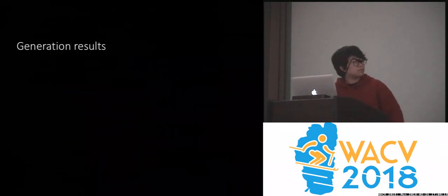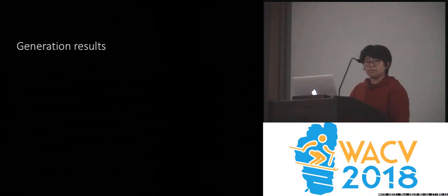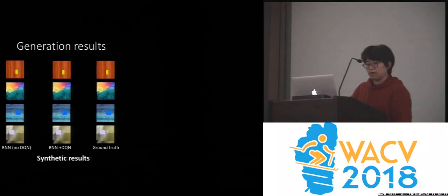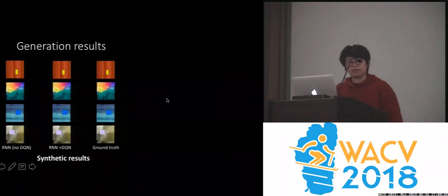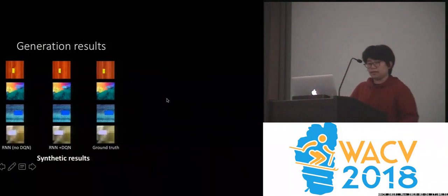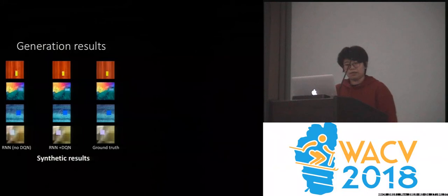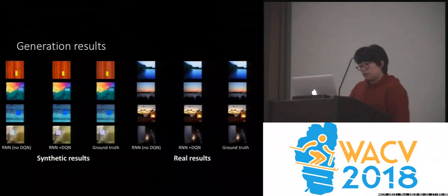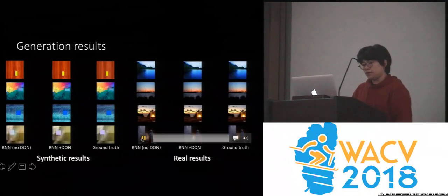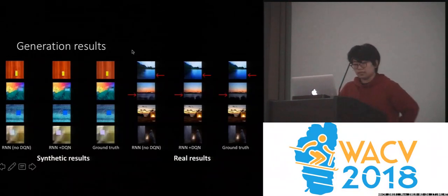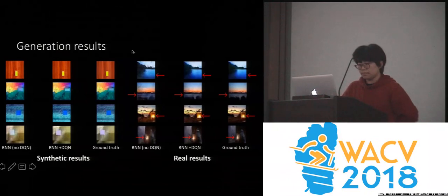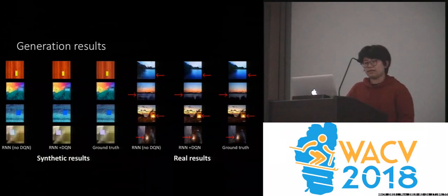We show generation results to demonstrate that our proposed model can improve cinemagraph generation. For synthetic data results, the first column shows the model without the deep Q network, the center column shows results from our proposed model, and the last column shows ground truths. We also show real cinemagraph generation results for both water flowing and fire categories, and we can see our proposed model can successfully localize and animate the target objects.